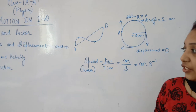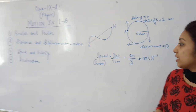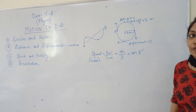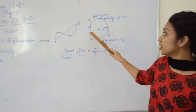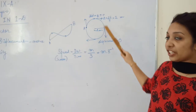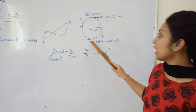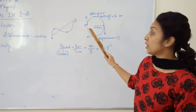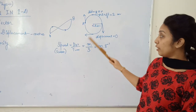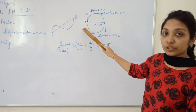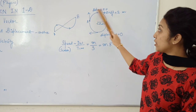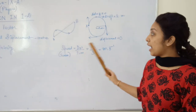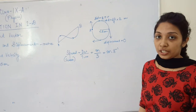Now we come to acceleration. Acceleration of a body is the rate of change of velocity. If there is a change in velocity, we say there is acceleration. Since the velocity is different at different points of the circular path, we can say the body has acceleration.